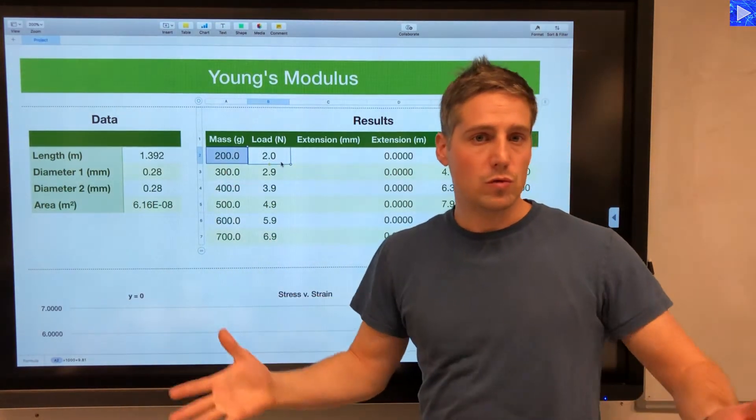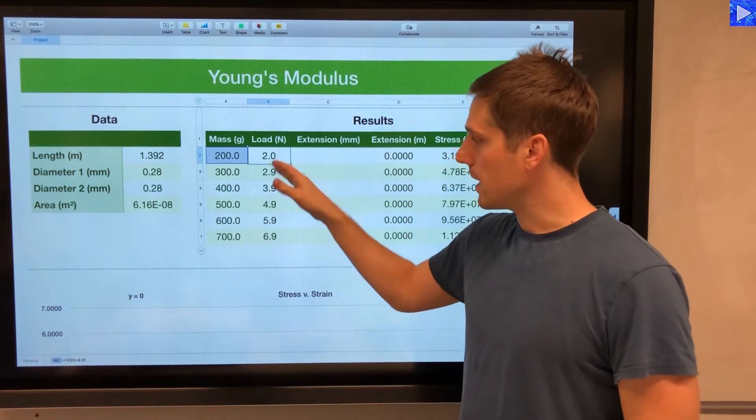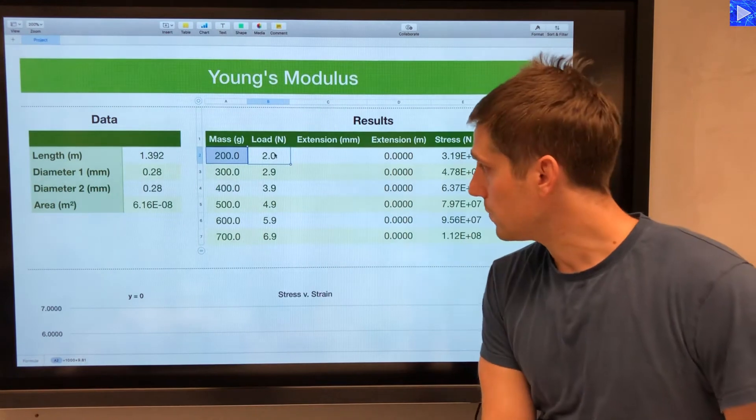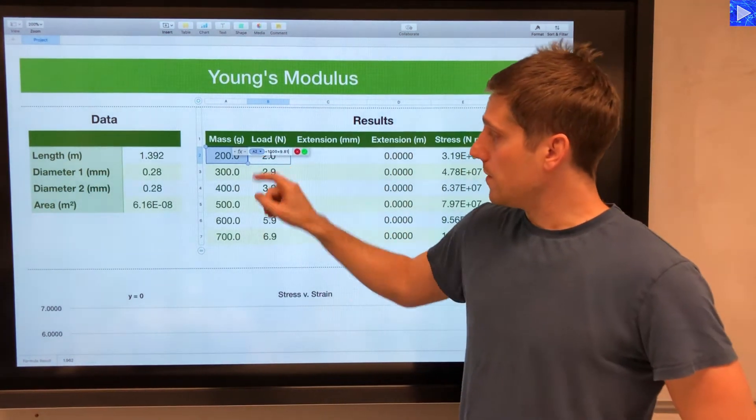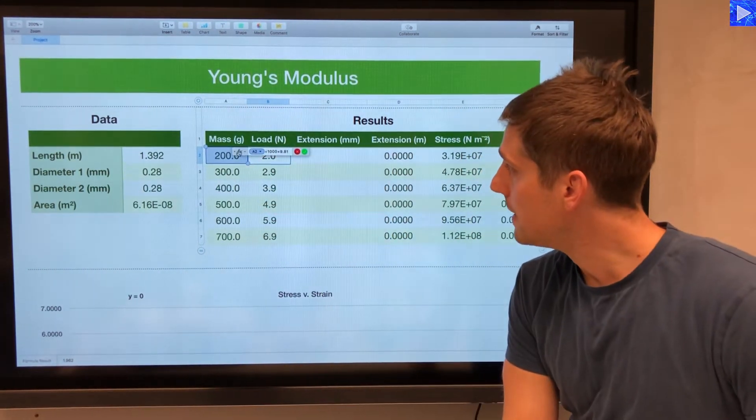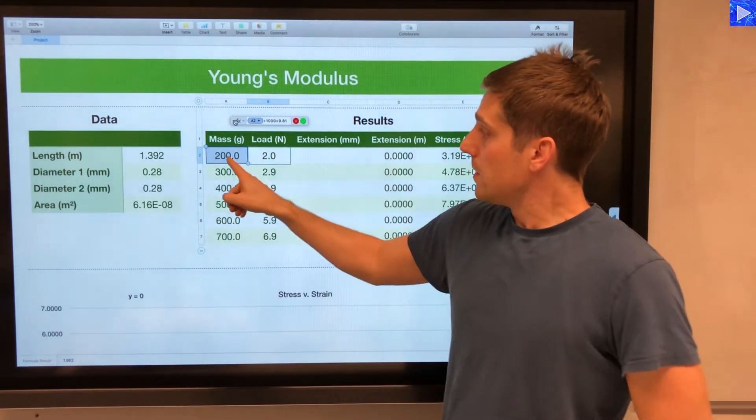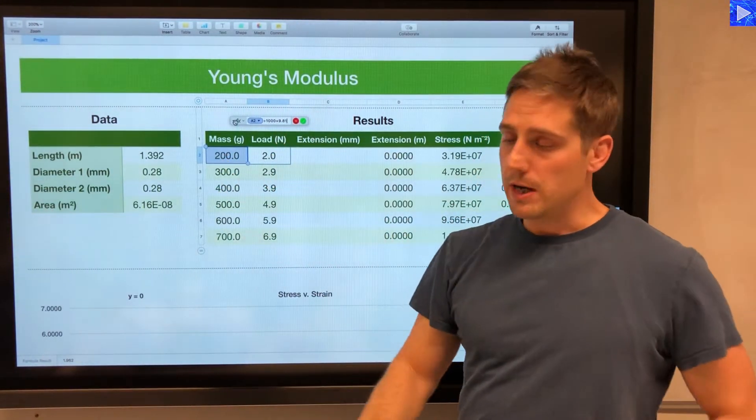Because the masses were already established, I've put those in there, and this is a formula that I just filled. So you can see, this value divided by a thousand times 9.81.